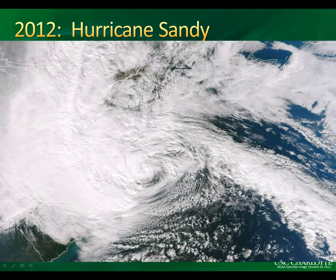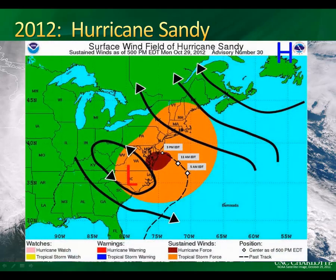In 2012, Hurricane Sandy, one of the largest hurricanes ever recorded, hit the East Coast. Hundreds of colleges and universities were affected as tropical storm force winds extended over 500 miles from the center of circulation. The storm cost an estimated $25 billion in lost business activity, and over 8.1 million homes lost power, some as far away as Michigan.